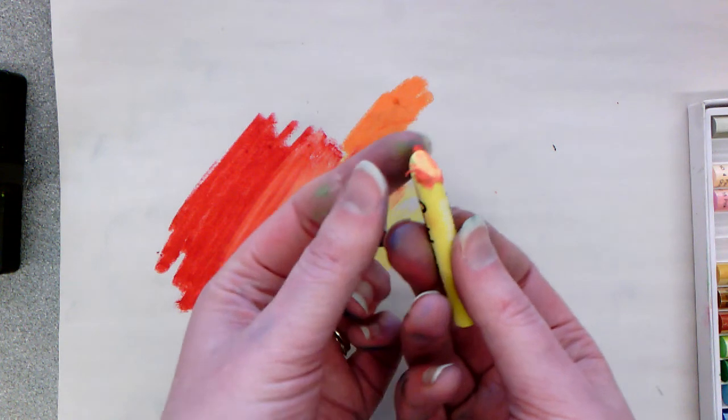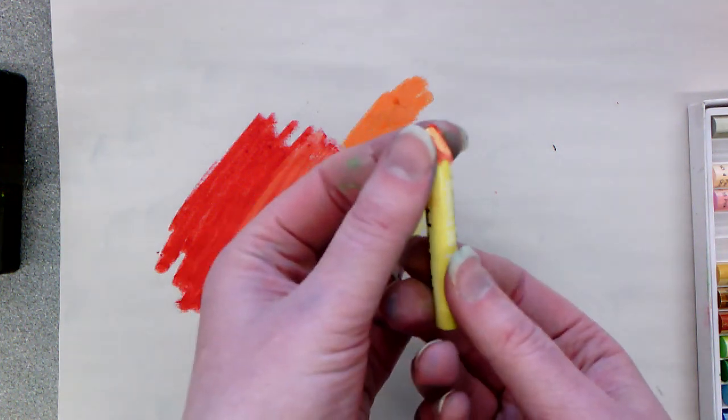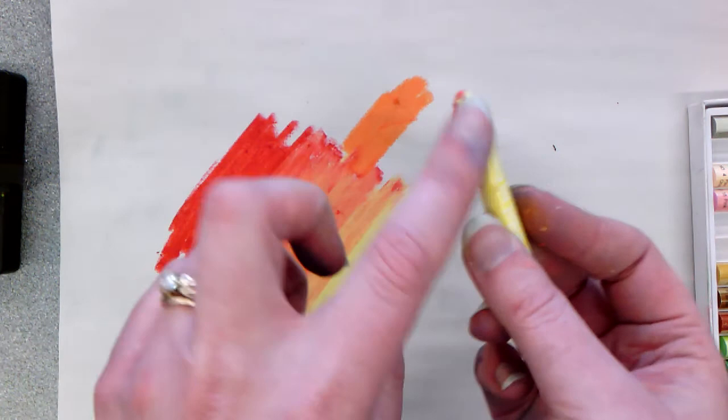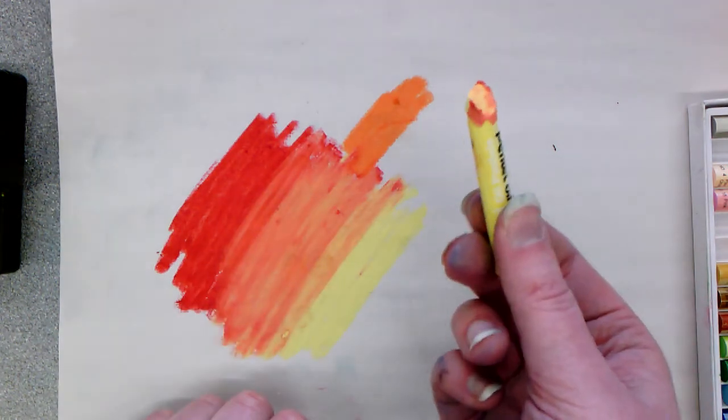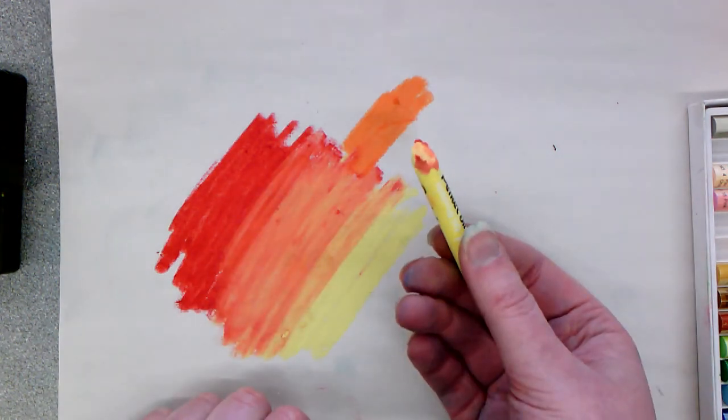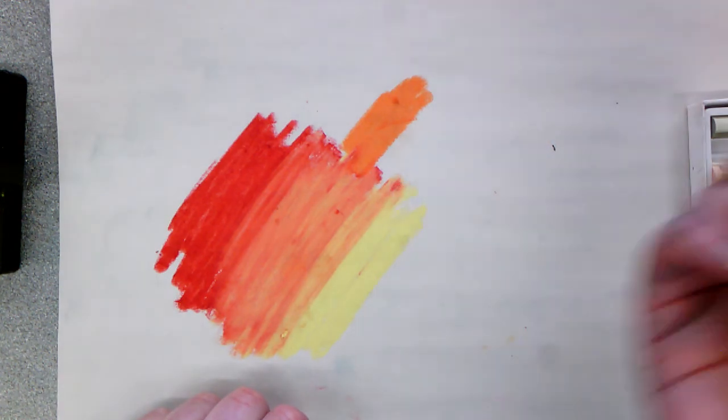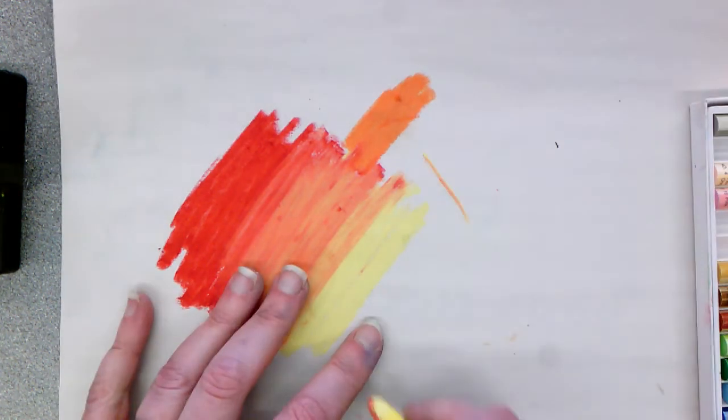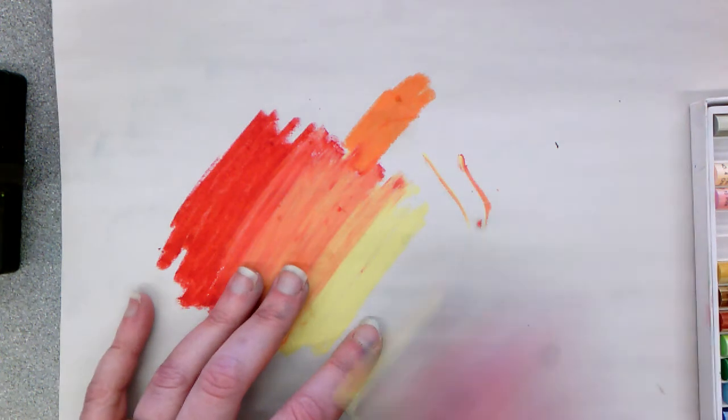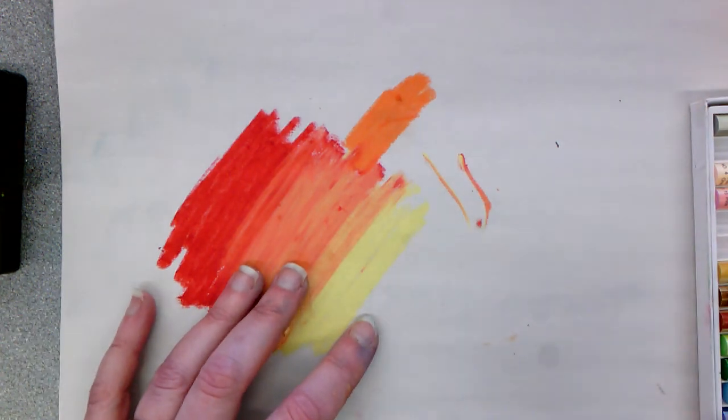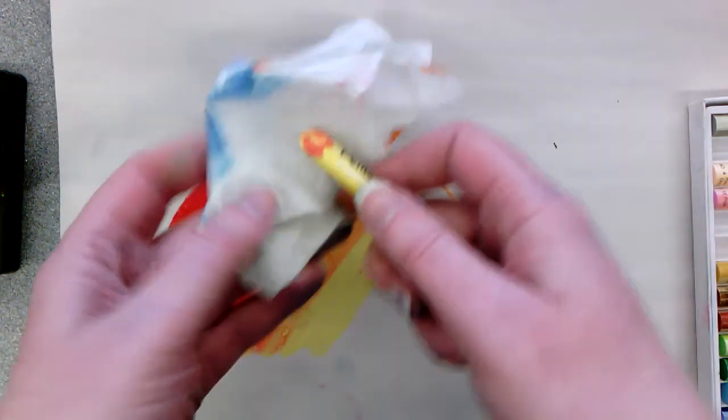So once you've blended with the oil pastel, do you see how it's kind of got a bunch of color on it now? If you were hoping for a pure yellow and you grabbed it out of the container, well, that's no good. So take a paper towel, just clean that color mix off before you put it back.